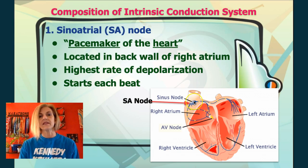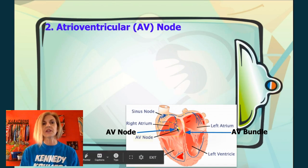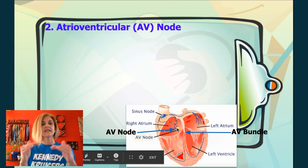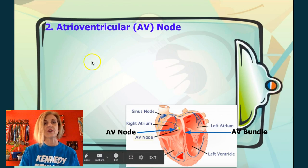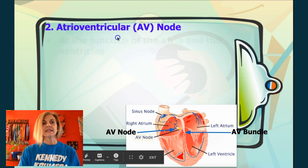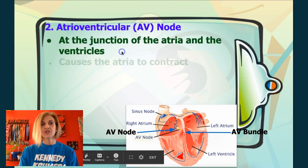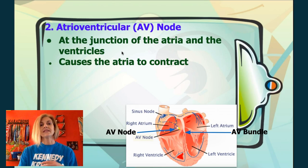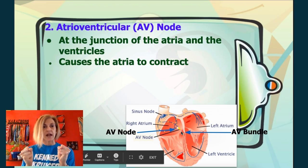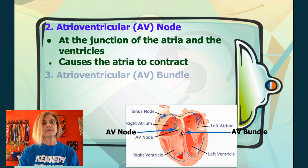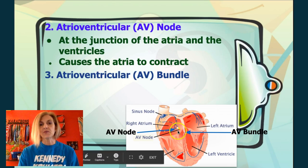The SA node begins the beat. The action potential will spread through the right and left atrium, then it will reach the atrioventricular node — the AV node — because it's found between the atrium and the ventricle. Once the impulse hits the AV node, there will be a pause while the atria contract, and then that impulse will move into the atrioventricular septum.